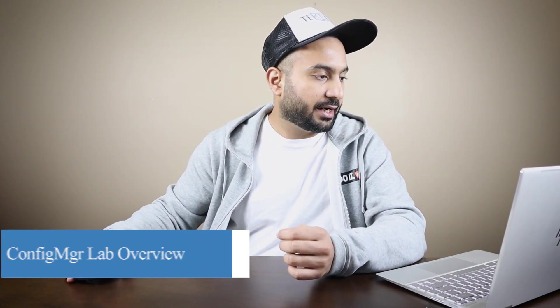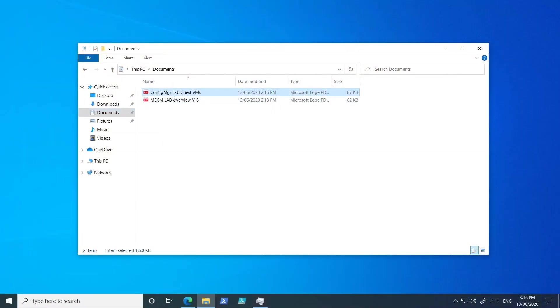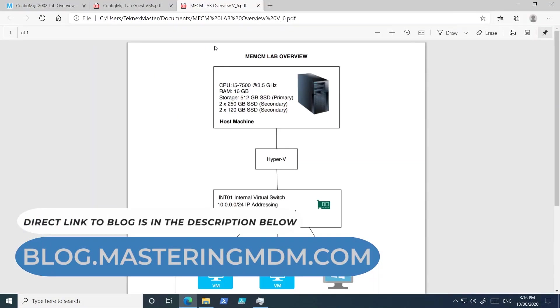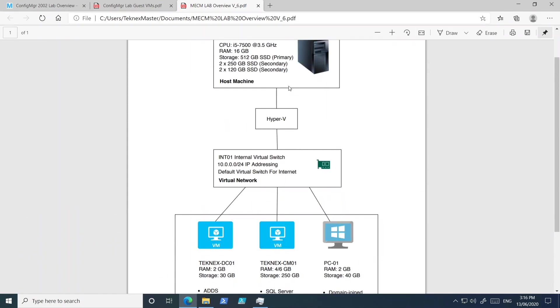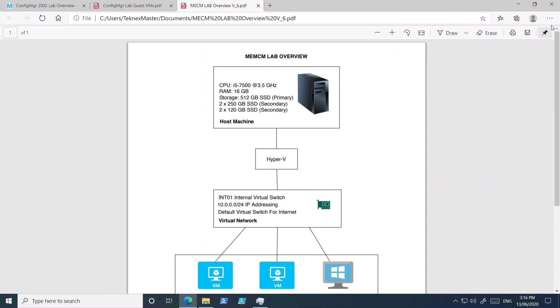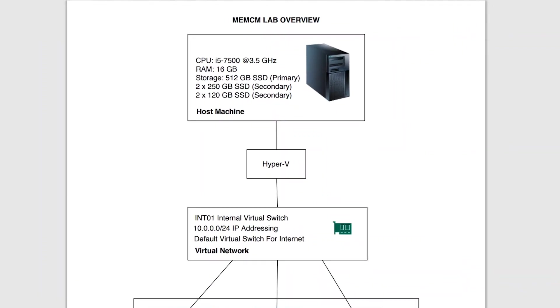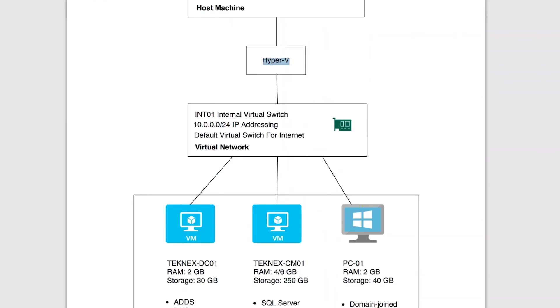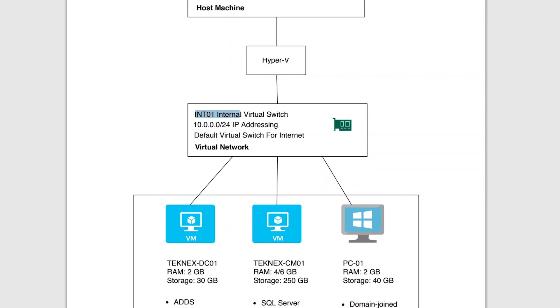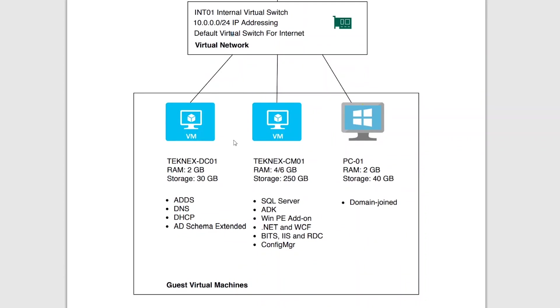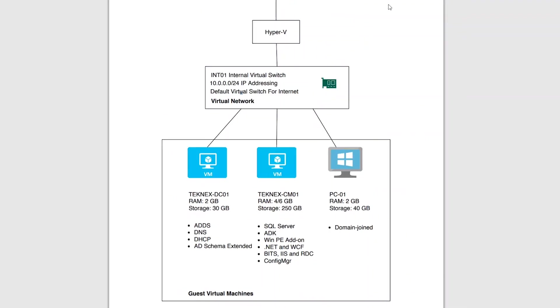To finish it off, I'll show you the whole lab overview — how our lab is going to look. I've put together a document, so let me open it and make it full screen. This is my host machine, the hypervisor is Hyper-V, and we will be using an internal virtual switch and the default virtual switch for internet. These are our virtual machines, and altogether this is how our network is going to look.